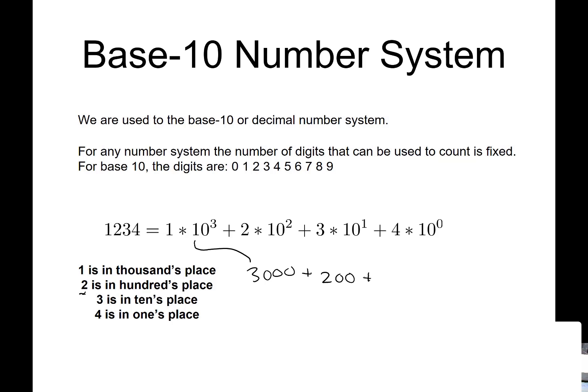Plus, and then we have 10 to the 1, so we have 3 in the ten's place. So 3 times 10 to the 1, so this is plus 30. And then we have 4 times 10 to the 0, so we have 4 in the 1's place. So 4 times 10 to the 0 is just 4.